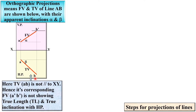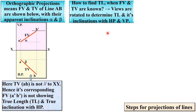The top view ab is not parallel to the XY line. Hence the corresponding front view a'b' is not showing the true length and true inclination with the horizontal plane. So how do we find the true length? Once front view and top view are known, the views are rotated to determine the true length and its inclination with HP and VP. You have to rotate views to find the true length.